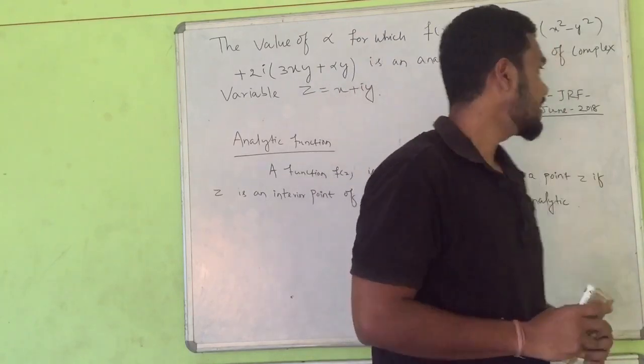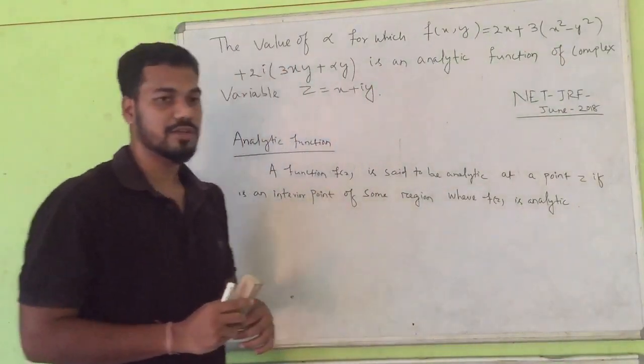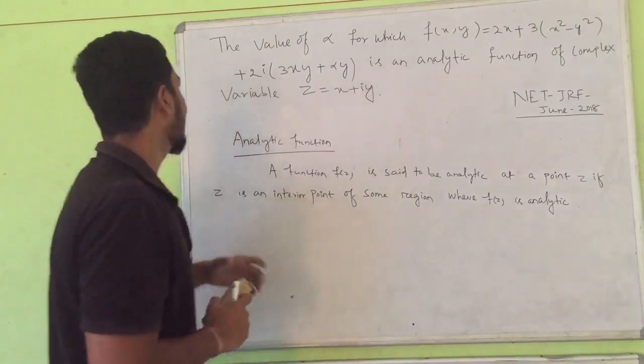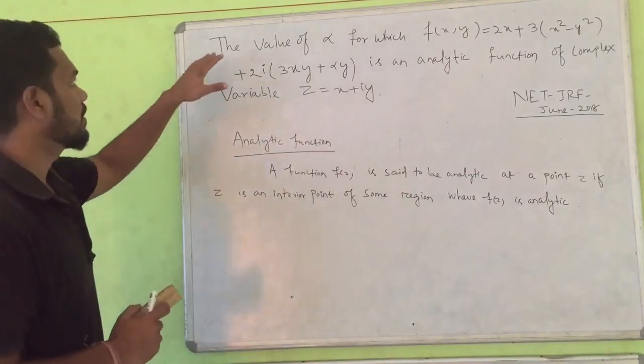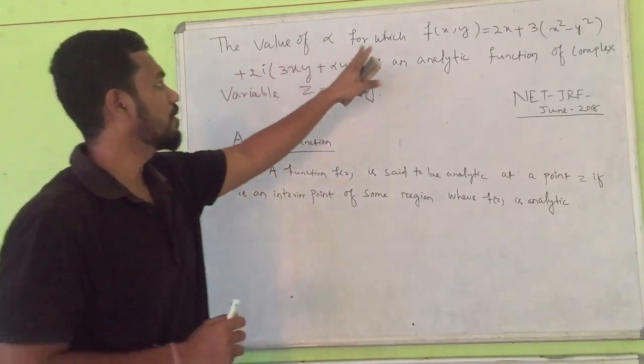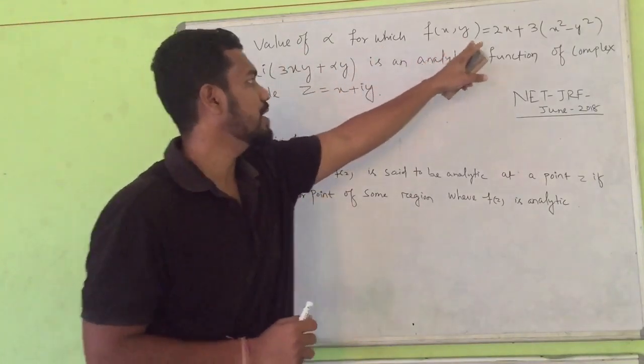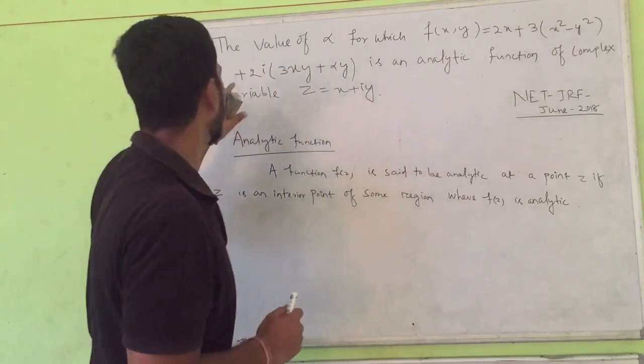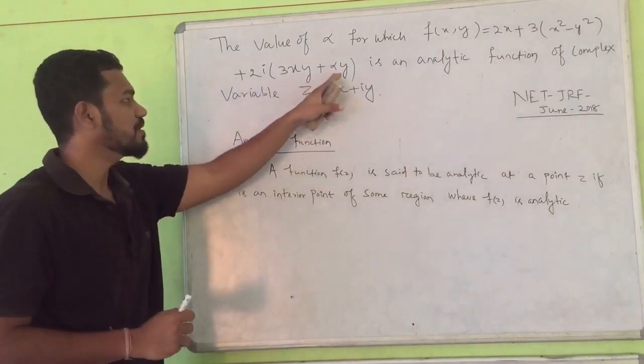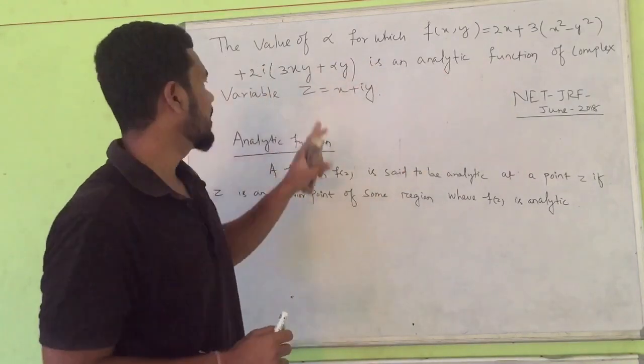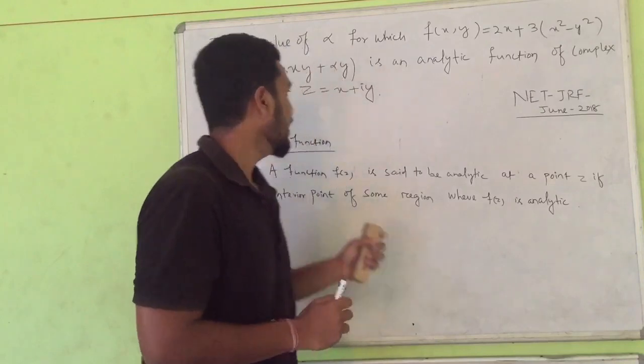Let's see the problem and we will discuss the concept behind the problem along with the detailed solution. The problem says: find the value of alpha for which f(x,y) equals 2x plus 3x square minus y square plus 2y, 3xy plus alpha y is an analytic function of complex variable z equals x plus iy.